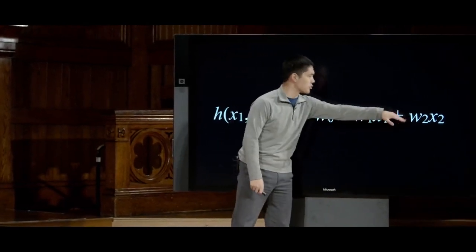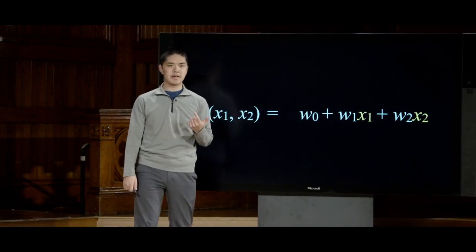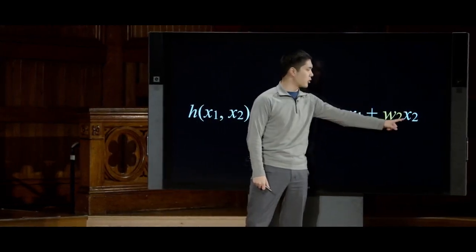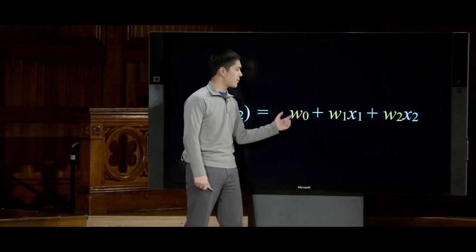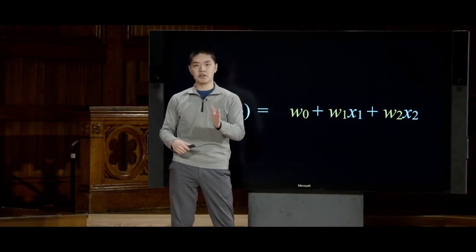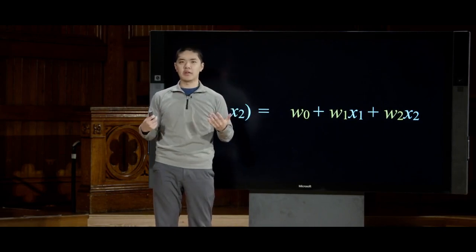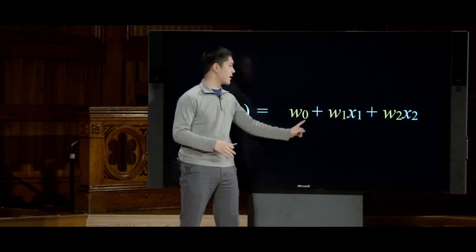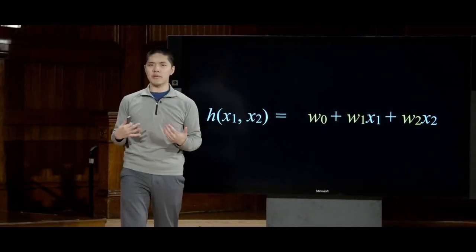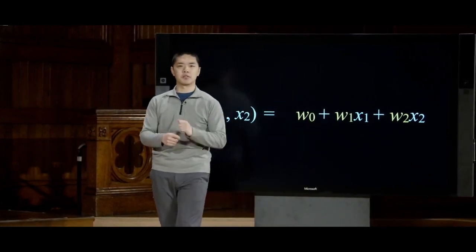Our hypothesis function equals weight0 plus weight1 times x1 plus weight2 times x2. The input variables x1 and x2 are each multiplied by some weight. Weight0 doesn't get multiplied by an input variable at all — it moves the function's value up or down, and is sometimes called a bias. So we have weights multiplied by the inputs, plus a separately added bias term. You'll hear both terminologies used in neural networks and machine learning.